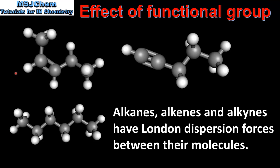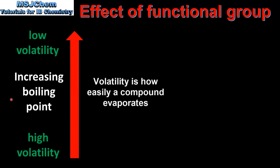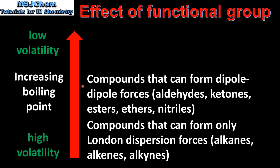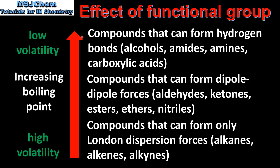Let's end with a summary, ranking organic compounds in order of increasing boiling point. Compounds at the bottom have low boiling points and high volatility, whereas compounds at the top have high boiling points and low volatility. At the bottom are non-polar molecules — alkanes, alkenes, and alkynes — which only form London dispersion forces. Next are polar molecules such as aldehydes, ketones, esters, ethers, and nitriles, which form dipole-dipole forces. At the top are alcohols, amides, amines, and carboxylic acids, which form hydrogen bonds and therefore tend to have higher boiling points and low volatility.